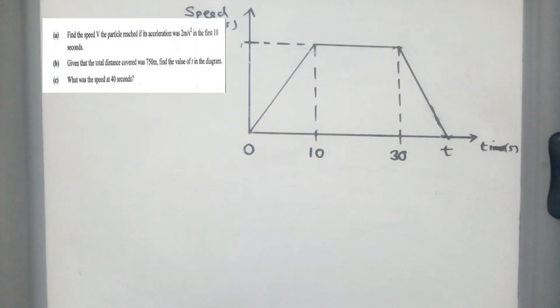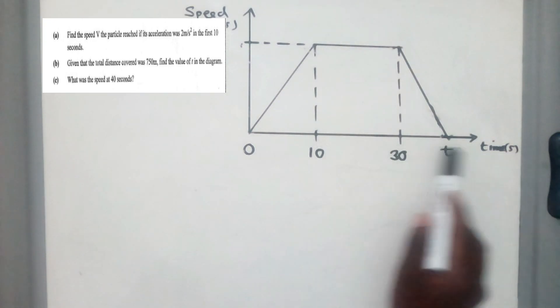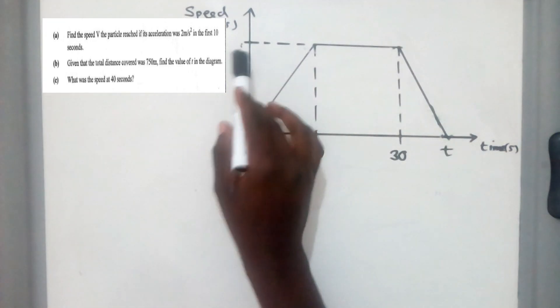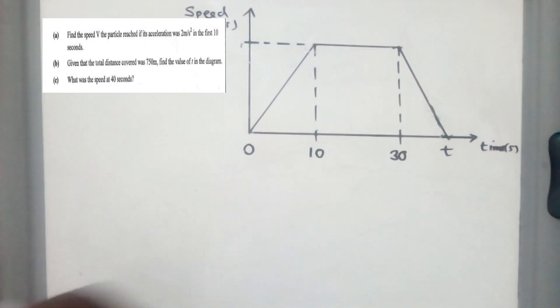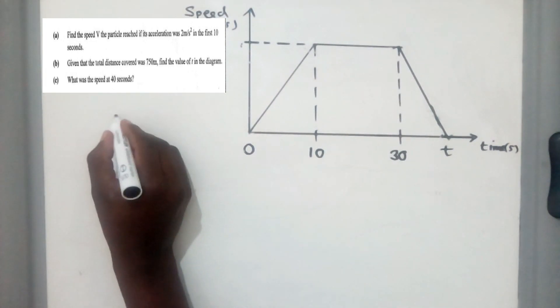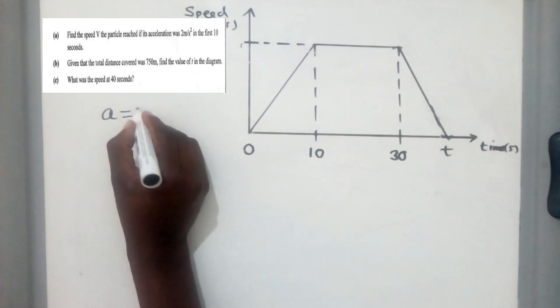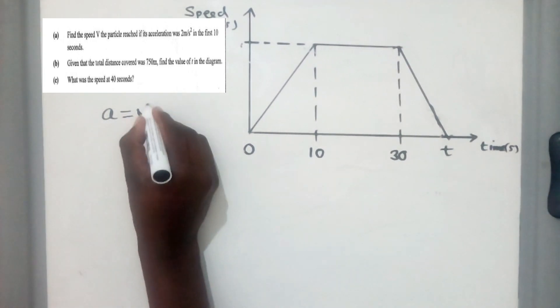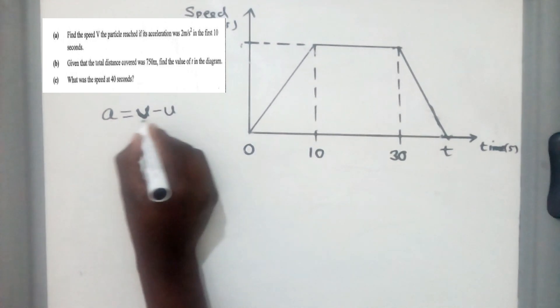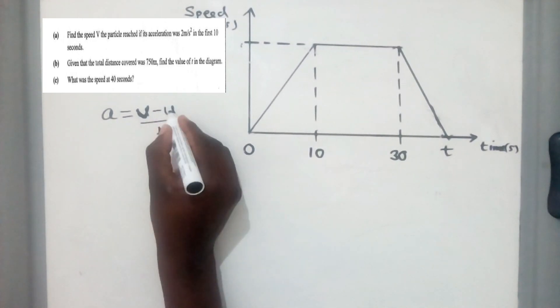Question 23a, find the speed v the particle reached if its acceleration was 2 meters per second in the first 10 seconds. So we know that this is time and this is speed. So they've given us acceleration to be equal to 2. So we're going to use the formula for finding acceleration. This formula looks like this.